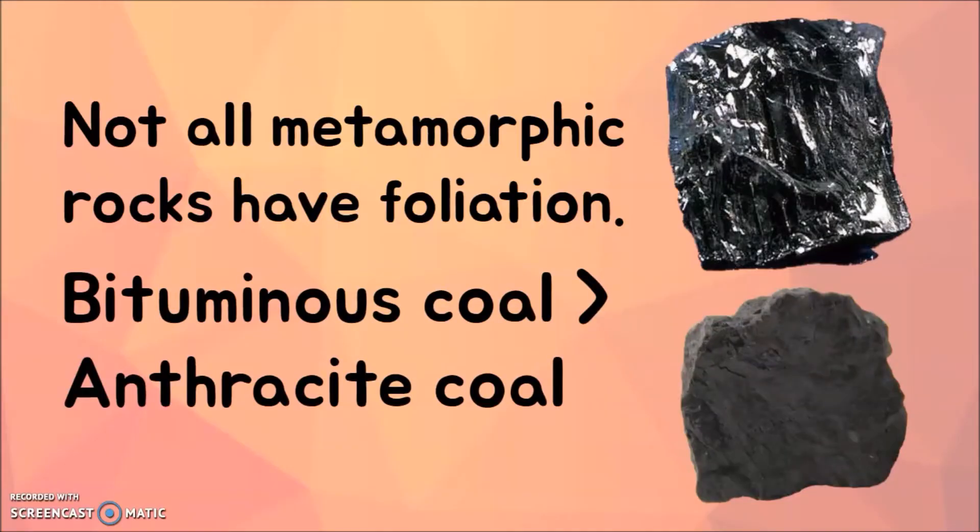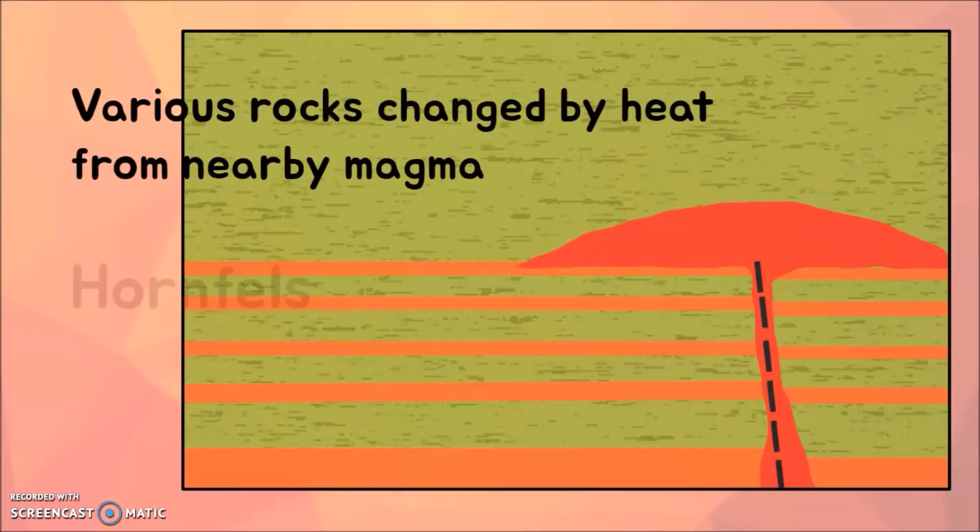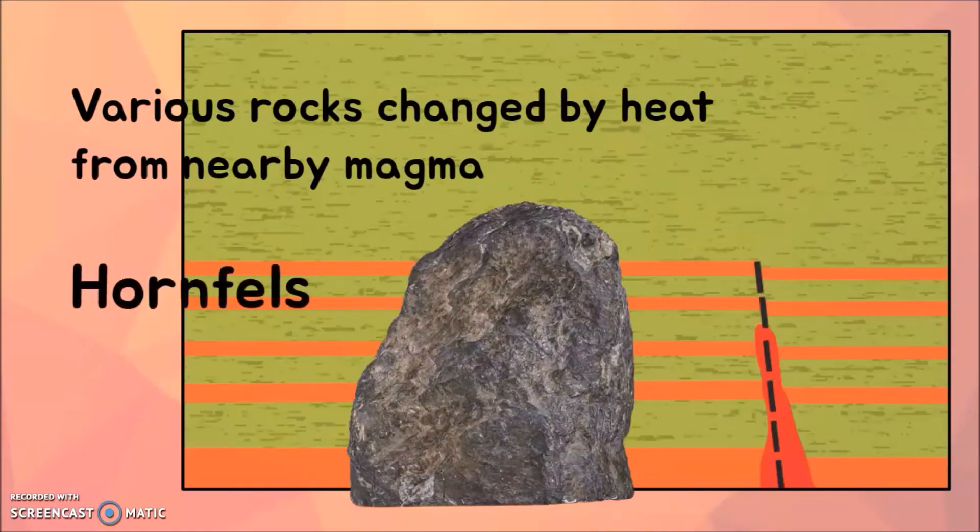The second type of metamorphism is called contact metamorphism, where various rocks will be changed by the heat from nearby magma. For example, the rock hornfels will only be made through contact metamorphism.